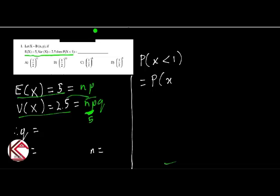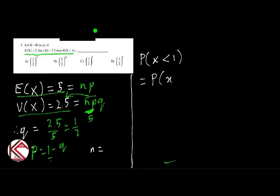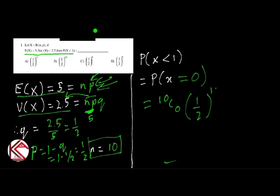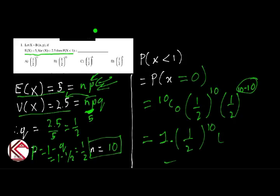If we have NP = 5, then Q = 2.5/5 = 1/2. Similarly, P = 1 - Q = 1 - 1/2 = 1/2. Now P(X < 1) = P(X = 0) = 10C0 × (1/2)^10 = 1 × (1/2)^10 = 1/2^10. So the final answer is 1/2^10, that is option P.